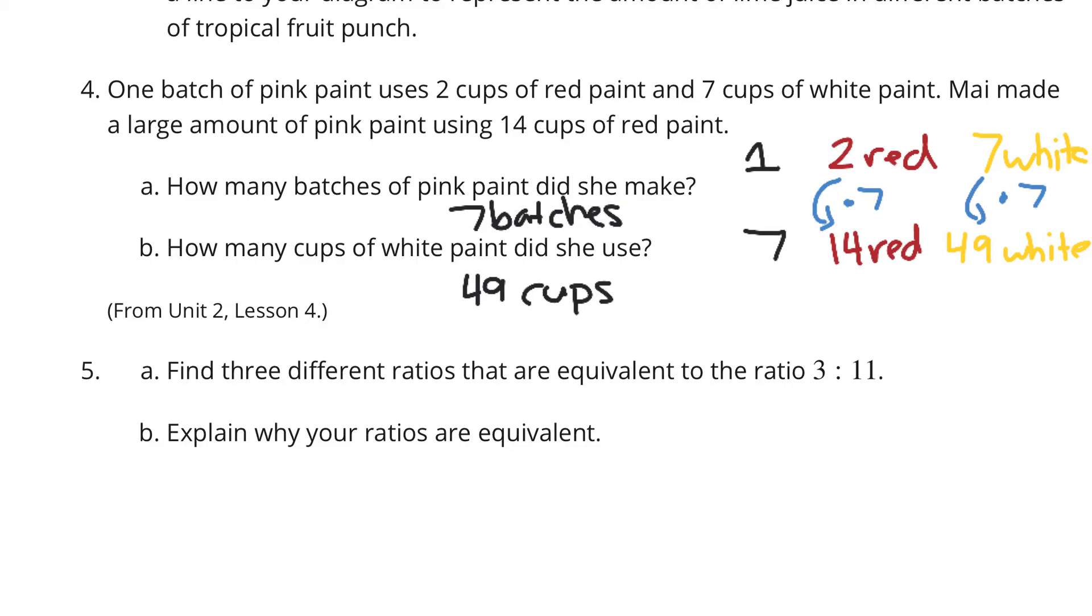Question five, find three different ratios that are equivalent to three to 11. What if we multiply both numbers by two? That would end up at six to 22. What if we multiply by three? You'd end up with nine to 33. And lastly, what if you multiplied by 10? Just to change it up. You would have 30 to 110.